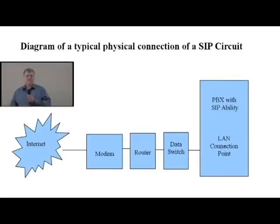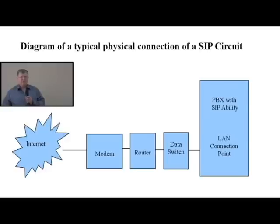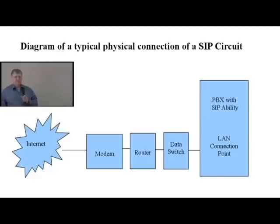Here we have a diagram of a typical physical connection of a SIP circuit, where it originates from the internet, comes into your building, passes through the modem, through the router, through the data switch. All of that belongs to the customer and is already in place. To that, you would hook up a PBX with SIP trunk capability, such as the IP Office Partner Edition.